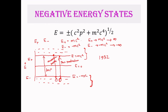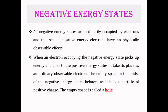The great explosion of particle physics since the 1940s has its roots in Dirac's development of quantum theory. To conclude: Dirac suggested that all negative energy states are ordinarily occupied by electrons, and this sea of negative energy electrons has no physically observable effects. When an electron in a negative energy state picks up energy and goes to a positive energy state, it takes its place as an ordinary observable electron. The empty space left in the negative energy states behaves as a particle of positive charge — and this empty space is called a hole.